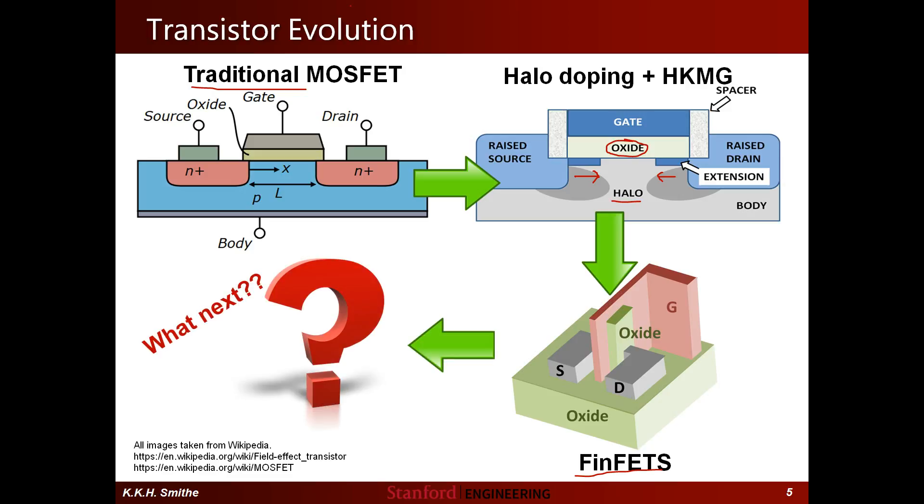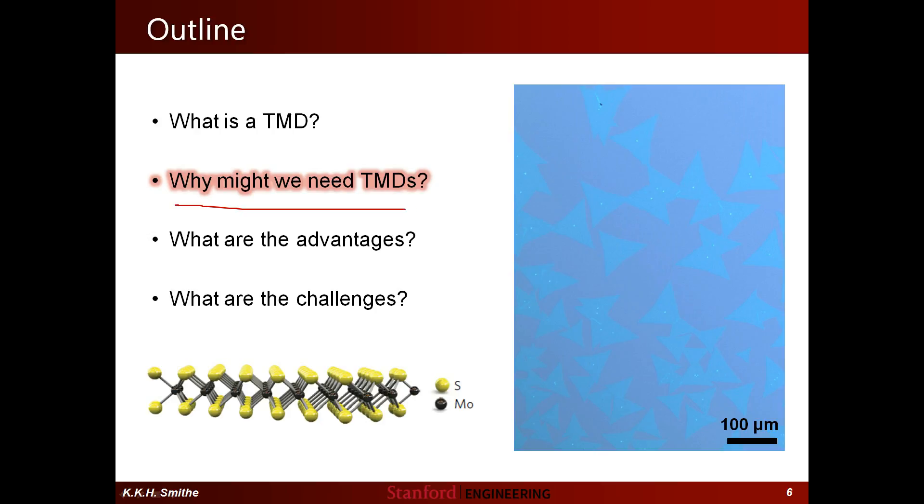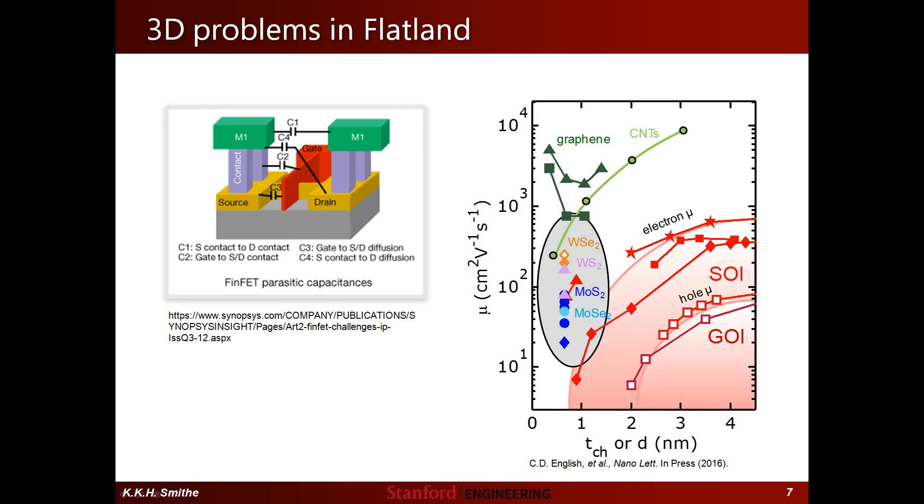Well, once SiO2 ran out of steam as a gate dielectric, we replaced that material with high-Ks. So maybe once silicon runs out of steam as a channel, we can replace that with a new material as well. And that was actually a bit of a spoiler to the question of why we might need TMDs in the first place. As we continue to make our transistors smaller and smaller, two big issues arise. The first issue is a geometrical one.